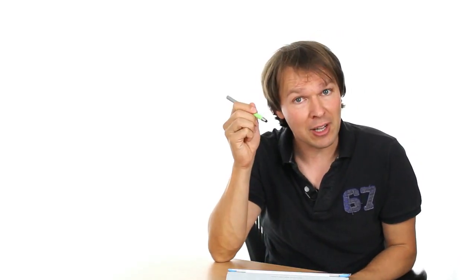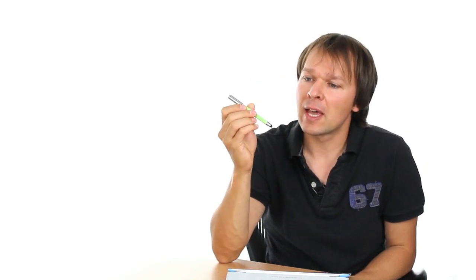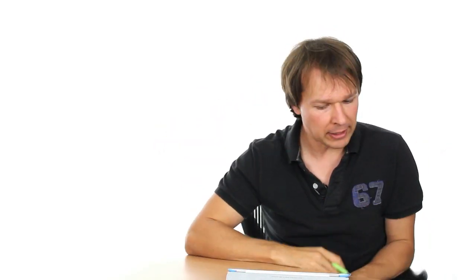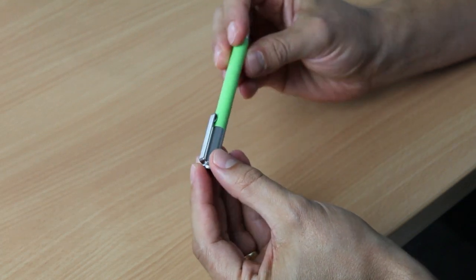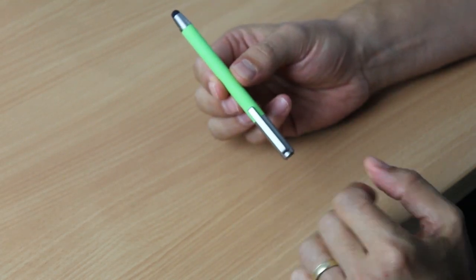So along comes the Bamboo Stylus and it just blows everything else out of the water that I've seen, including my fingers. So it is really an amazing little stylus that allows you to draw on your screen. And I'll be illustrating for you in a minute how this works and why this is so cool.